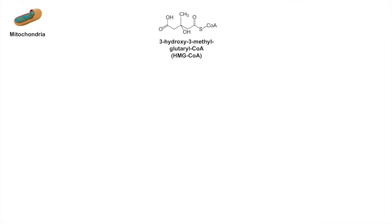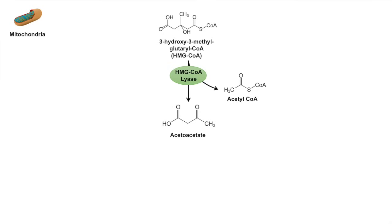Once we have HMG-CoA within the mitochondria, we can undergo a reaction via the enzyme HMG-CoA lyase. What happens is one of the acetyl-CoAs will actually be removed again, and in the process this will produce acetoacetate. Acetoacetate is actually one of the ketone bodies — one of the three classical ketone bodies — so acetoacetate is important to remember.